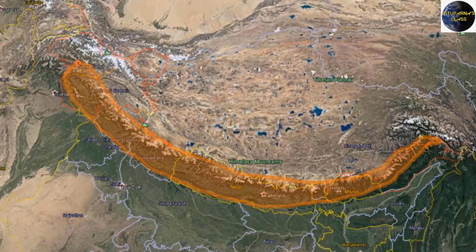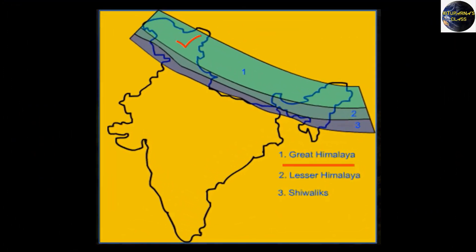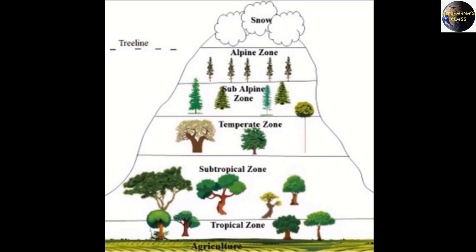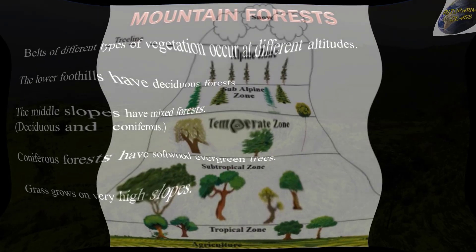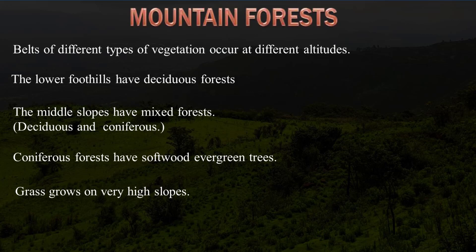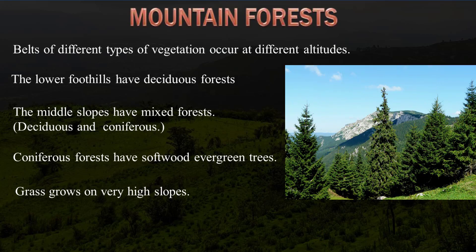The Himalayan mountains are divided into three ranges: Himadri (the Greater Himalayas), Himachal (the Middle Himalayas), and Shivalik (the Lower Himalayas). Their altitude can vary from 900 meters to 8,000 meters above sea level. As we go from the foothills towards the higher ranges, temperature drops, directly affecting the natural vegetation. The lower foothills have deciduous forest, and the middle slopes have mixed deciduous and coniferous forest.